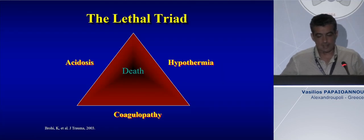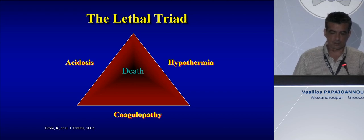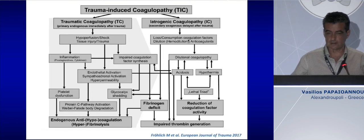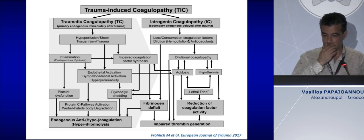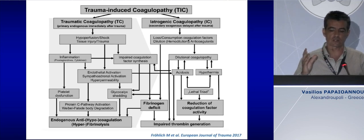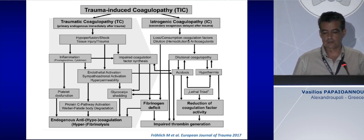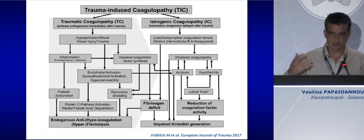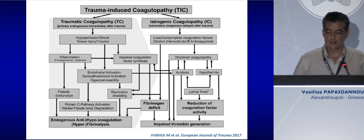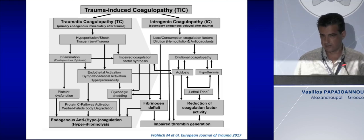The major problem in the ICU is the so-called lethal triad, which includes three components: acidosis, hypothermia, and coagulopathy. There is an interrelation between these pathological disorders. There are actually two syndromes. There is traumatic coagulopathy, which is a primary endogenous alteration immediately after trauma associated with tissue hypoxia, inflammation, and a state of SIRS — systemic inflammatory response syndrome — which impairs synthesis of coagulation factors.